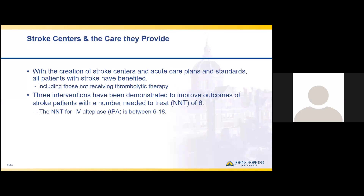With regards to stroke centers and the care they provide, with the creation of stroke centers around 1996, we have now created acute care plans and standards that have benefited all patients who have a stroke, regardless of whether they get TPA or thrombolytic therapy or not. The three interventions demonstrated to improve outcomes have a number needed to treat of six, meaning for every six patients that receive these interventions, one patient benefits. In comparison, the number needed to treat for IV alteplase is between six to eighteen, so you may need to treat up to eighteen people with TPA before a benefit is seen in one. So these three interventions actually help more people.